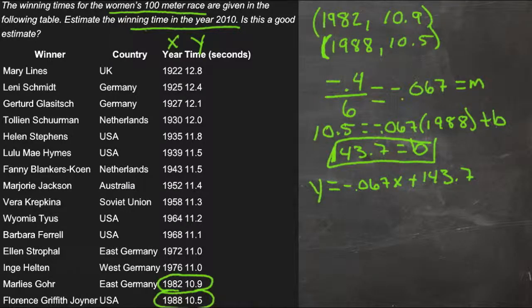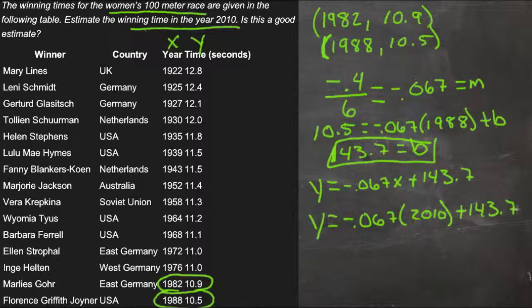So now we can take this information. What we really want to do is find out the year 2010, so we'll plug 2010 in for x, and we'll get y equals negative 0.067 times 2010, plus 143.7. Do the math, and we get y equals 9.03 seconds.